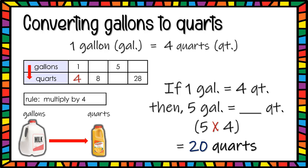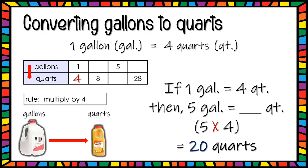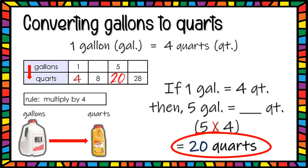Now let's find out how many quarts 5 gallons will be. If one gallon equals 4 quarts, then 5 gallons equals how many quarts? Using the rule of multiplication, we multiply the number of gallons by 4 — because 4 quarts make 1 gallon. So 5 times 4 gives us 20. Therefore, 5 gallons equals 20 quarts.